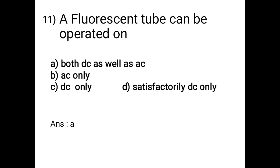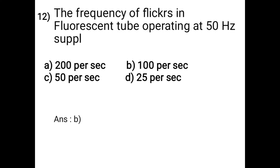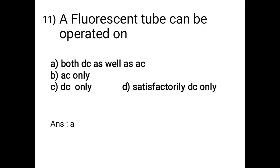Question 11: A fluorescent tube can be operated on: A - both DC as well as AC, B - AC only, C - DC only, D - satisfactory DC only. The answer is option A: both DC as well as AC.